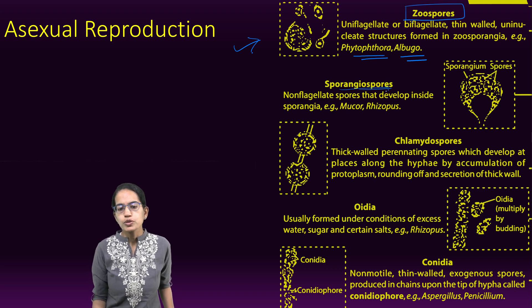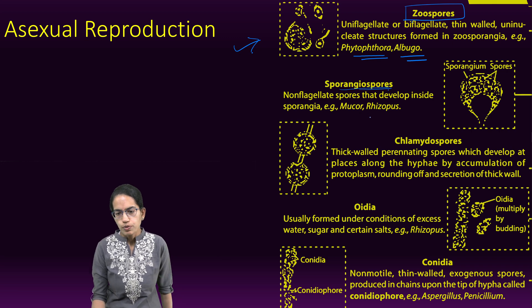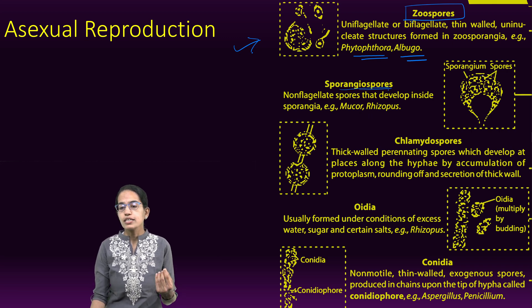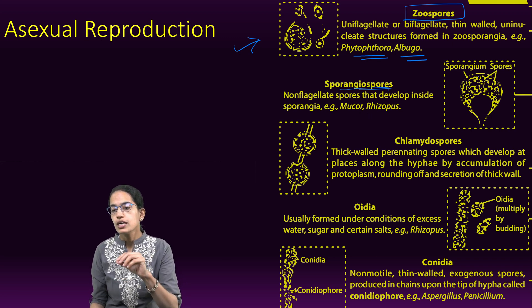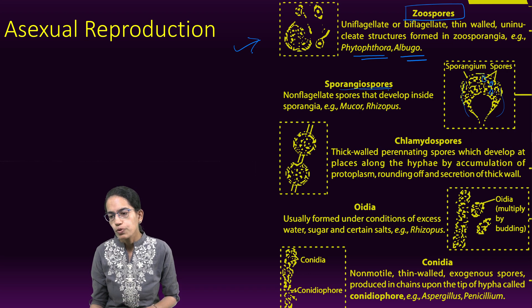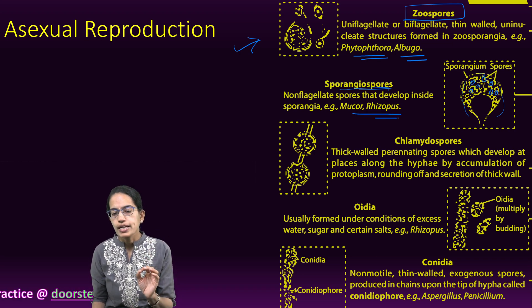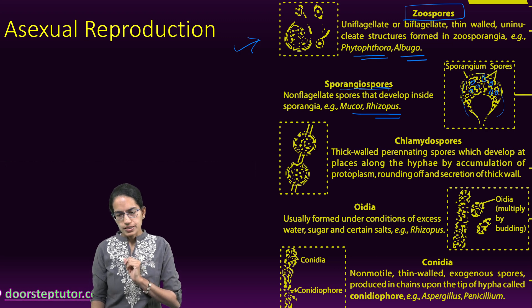Sporangiospores are non-flagellate spores seen within the sporangia. This is the sporangia, and within these there are spores, but these spores are non-flagellate. Mucor and Rhizopus are good examples.